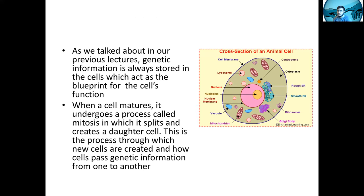As we talked about in our previous lecture, genetic information is always stored in the cells, which act as the blueprint for the cell's function. You can see here a cross-section of an animal cell, and the genetic information in an animal cell is always located in the nucleus. We'll talk about later how that's not always the case — some cells don't even have a nucleus — but they all have some DNA or genetic information, whether it be DNA or RNA.